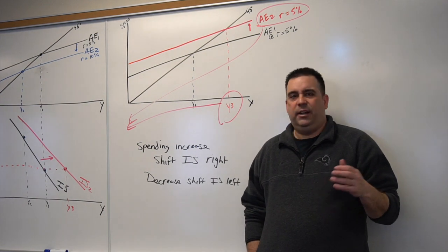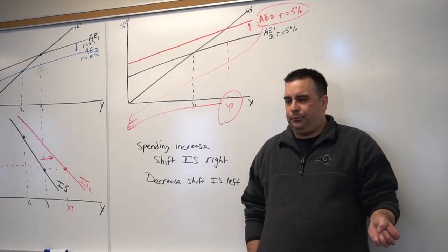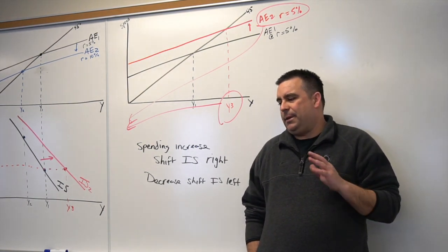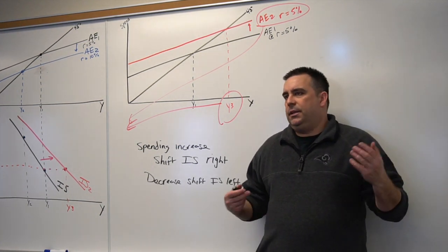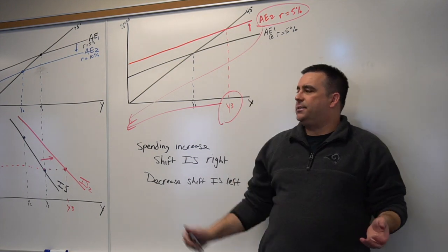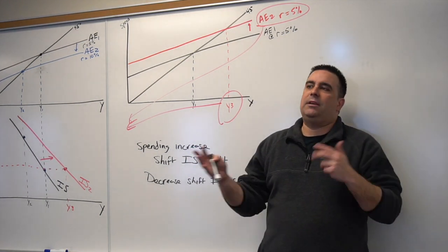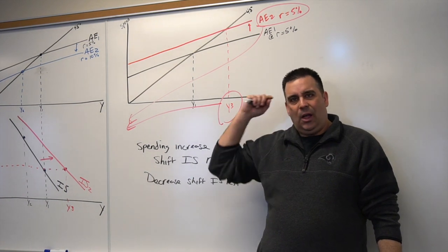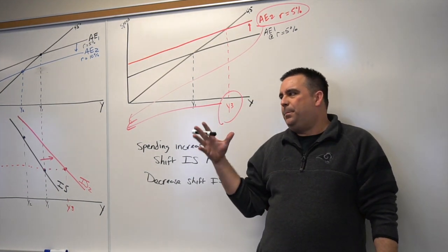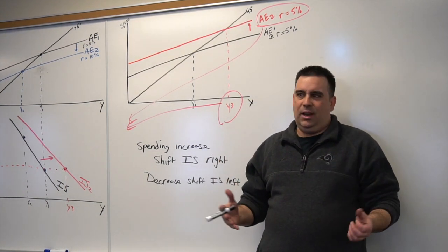Maybe another safe default. The only time it gets a little iffy is whenever we start looking at investment, just because we have to be careful on what is causing the investment spending change. Is it investment spending at a constant R, or is it investment spending because R changed?